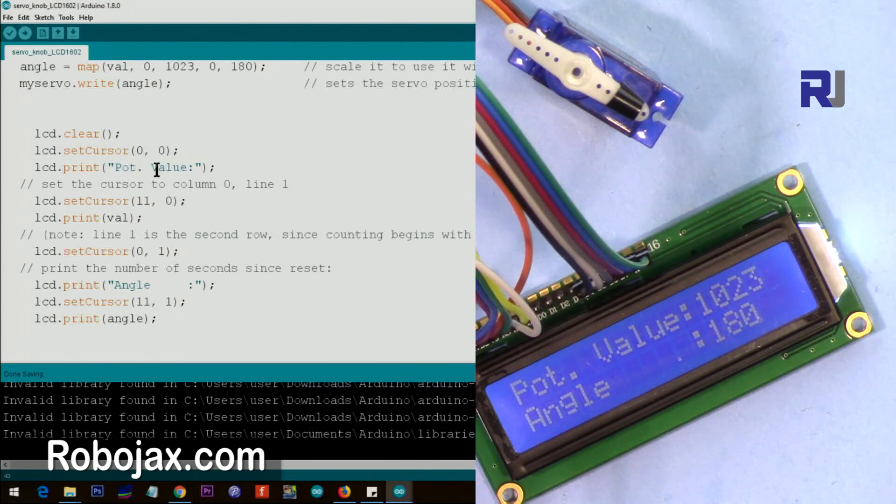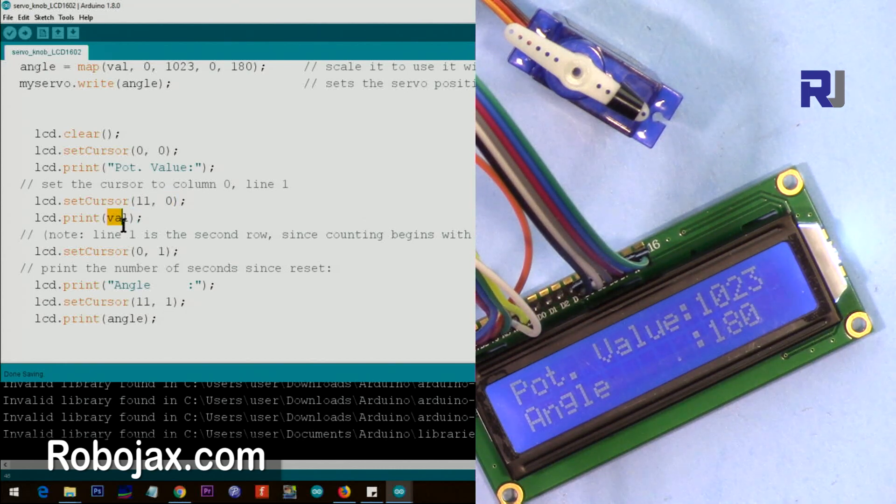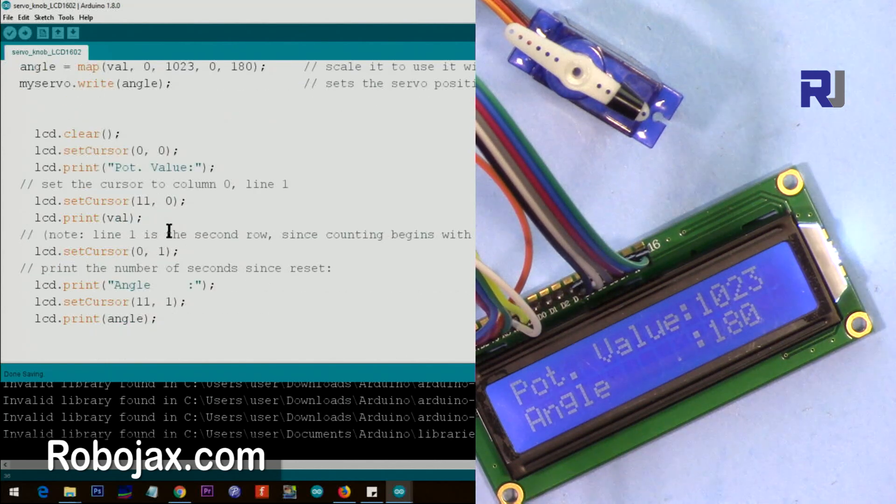Then we set the cursor after that at character 11, line 0. That line 0, character 11, is here. And we say print val. This val is a value that is coming from here, from here, for input. So we are printing the value as you can see it here.